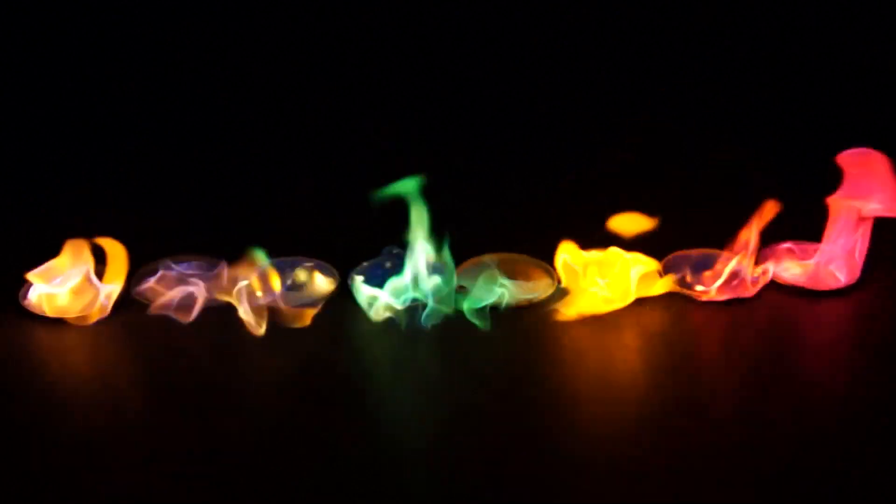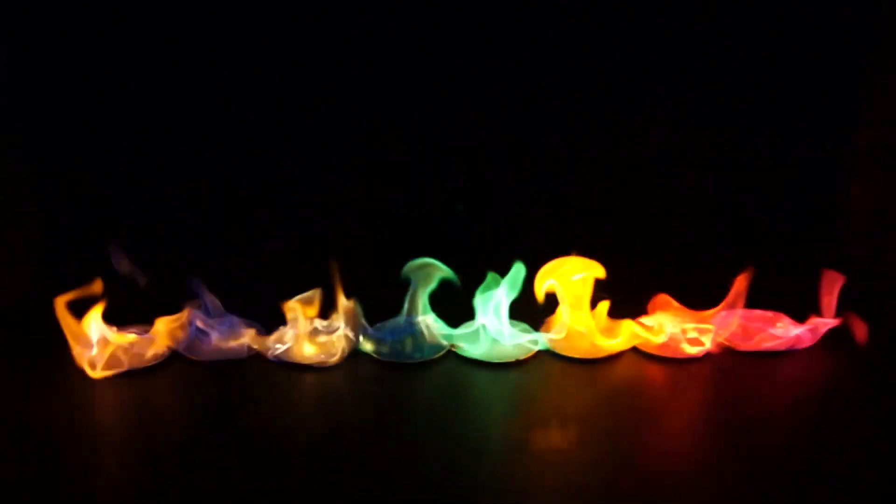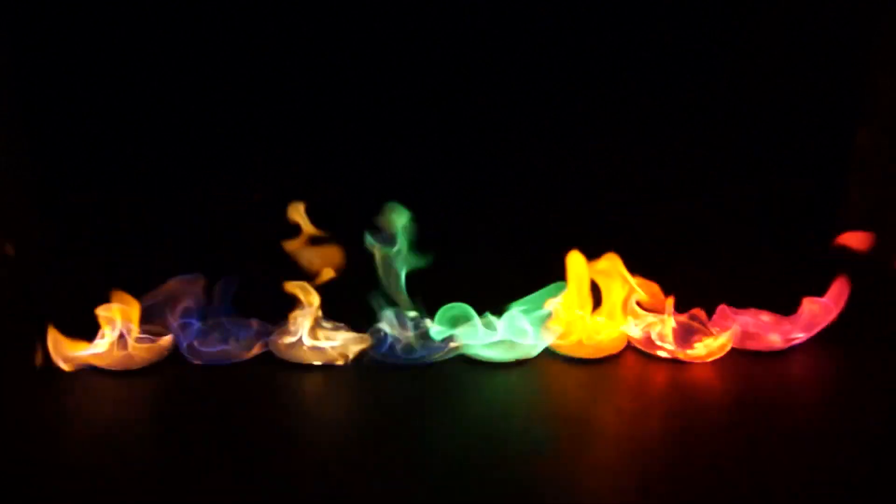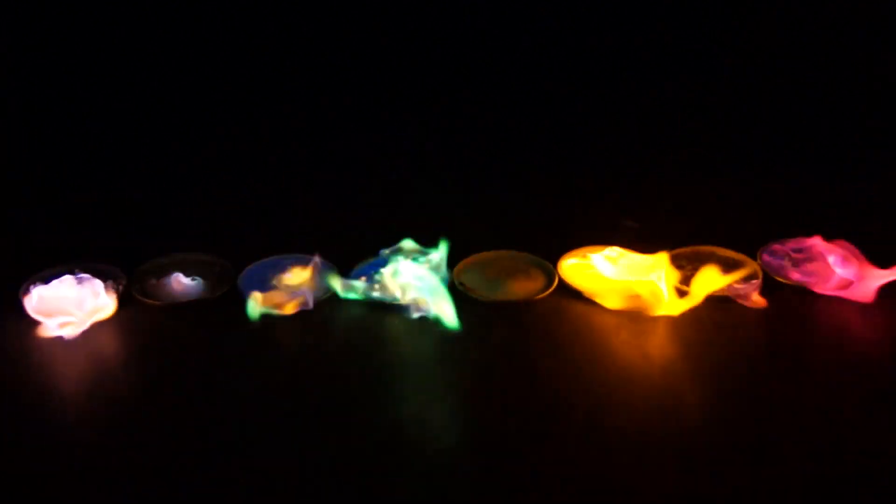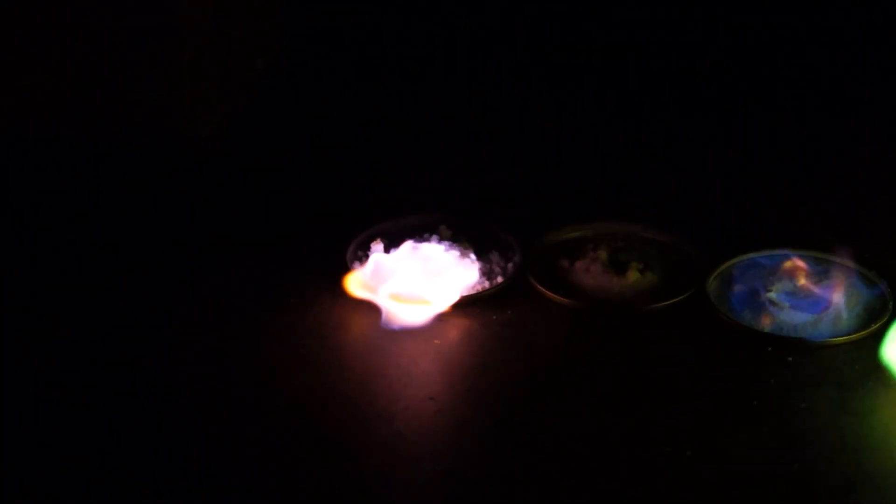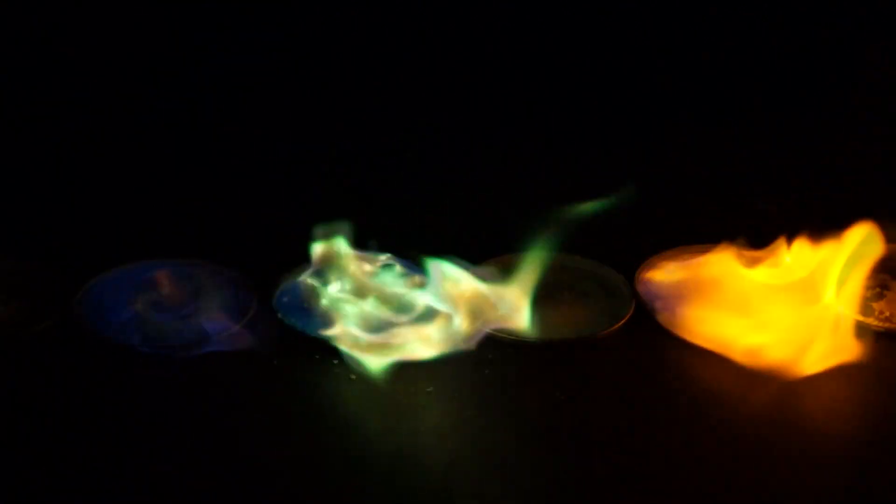At the end methanol slowly burns down and the flames are reduced. Now we can see more clearly how different salts paint their flames. For example, potassium chloride which previously was almost yellow now became more purple. Copper sulfate has also become more green. After methanol is burned the experiment stops.